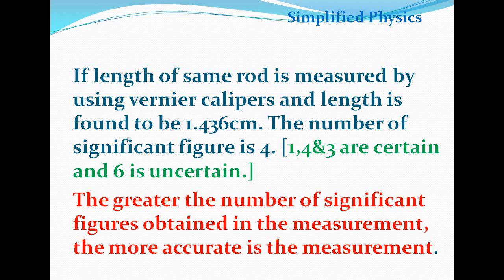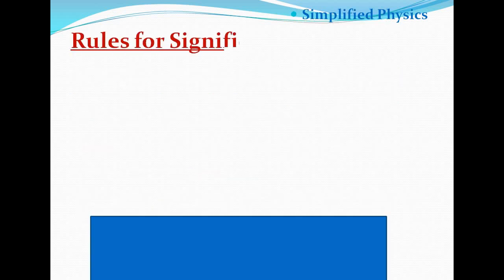A greater number of significant figures means a more accurate measurement. This means Vernier calipers give a more accurate measurement compared to the meter scale. Now let's look at the basic rules for significant figures.